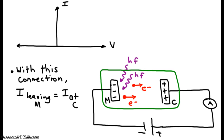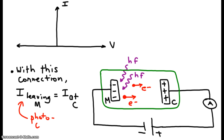When the connection is made like so, all of the electrons, which are negative, are successfully attracted toward the collector plate and they are captured. They can't be ejected off to the side and recombine with glass — instead, we successfully capture every single one. Because of that, the current that leaves the metal plate M is equal to the current at C. The current leaving M we call the photocurrent.